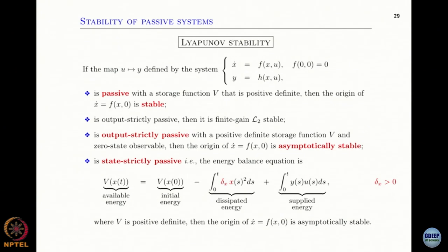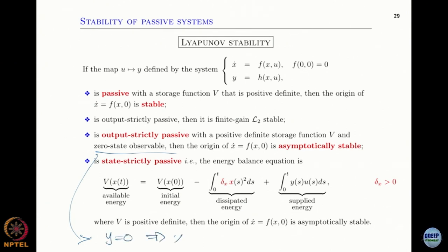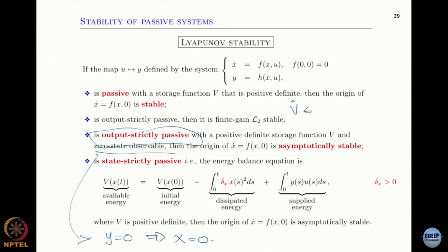In addition to being output strictly passive, the system must also be zero-state observable. Zero-state observability means that y equal to 0 implies x equal to 0. If you have worked with Lyapunov, essentially in this situation of output strict passivity, V-dot — because it is output strictly passive — will have a minus y-squared term.